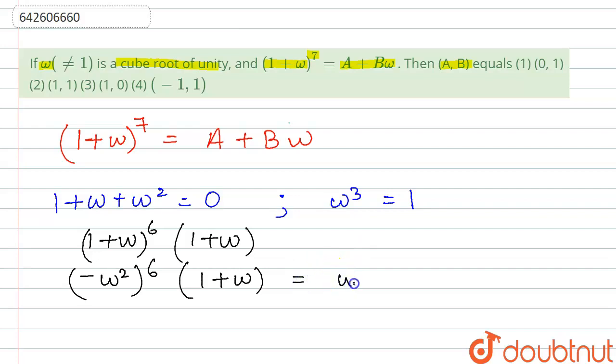So this is going to be equals to omega power 12 and 1 plus omega. Now omega power 12 can be written as omega cube power 4 multiplied by 1 plus omega. Omega cube is 1 and 1 power any value is going to be equals to 1.